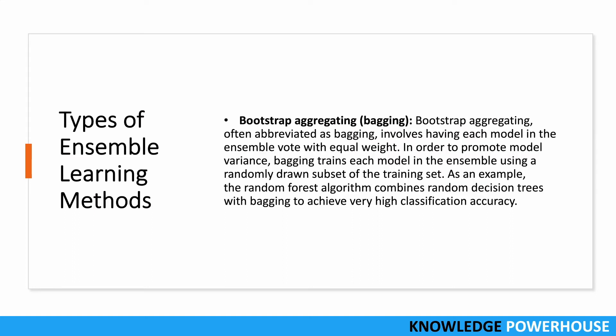Bootstrap aggregating, or bagging, involves having each model in the ensemble vote with equal weight. To promote model variance, bagging trains each model using a randomly drawn subset of the training set. As an example, the random forest algorithm combines random decision trees with bagging to achieve very high classification accuracy — multiple decision trees with varied hyperparameters or classification criteria are combined for the final result.